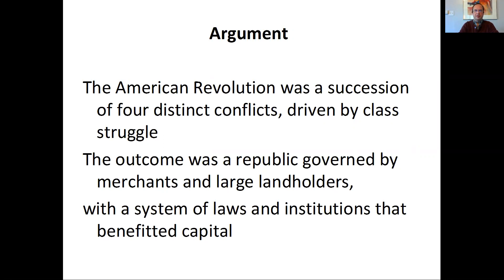The outcome of the whole process at the end of these four phases of the revolution was that you get a republic governed by merchants and large landholders to the exclusion of everybody else, and a system of laws and institutions that benefited capital and the development of a capitalist society. That is still pretty revolutionary — a republic as opposed to a monarchy, capitalism as opposed to the moral economy of old.